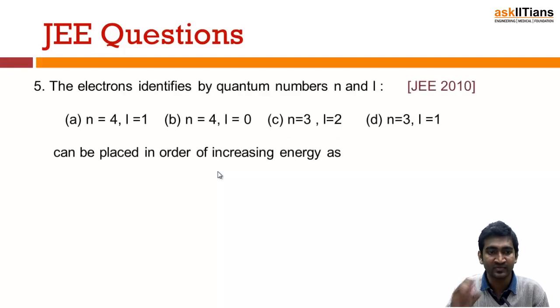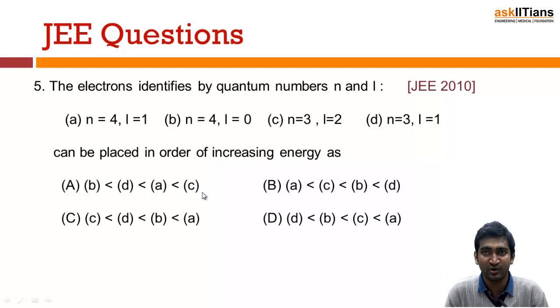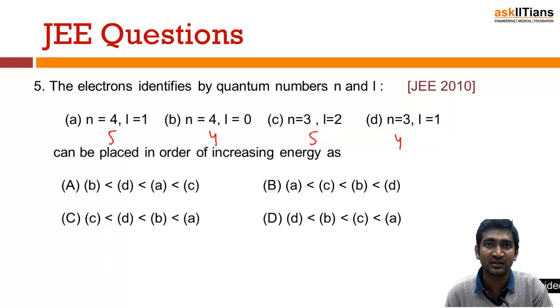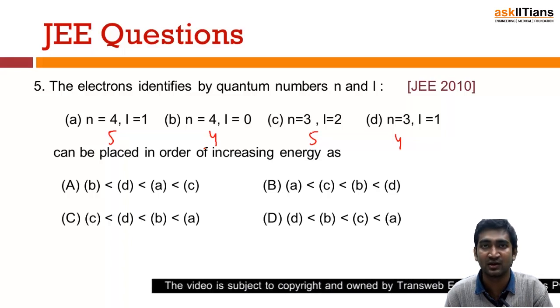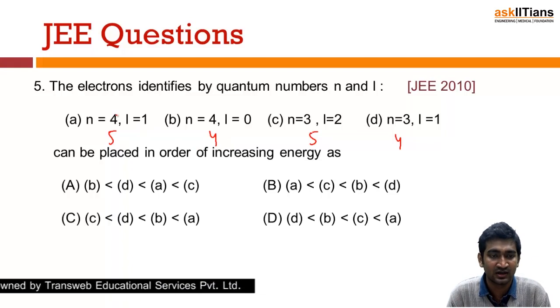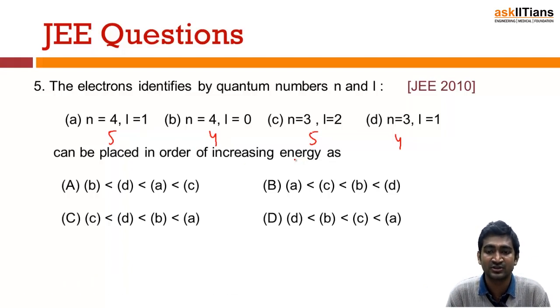This question: the electrons identified by quantum numbers n and l - n=4 l=1, n=3 l=0, n=3 l=2, and n=3 l=1 - can be placed in order of increasing energy. As I have told you, n+l rule, just apply that. For this it will be 5, for this it will be 4, here 5, and 4 again. You can see there are two pairs in which my n+l is the same. In that case you have to check the smallest value of n, that will be the lowest energy.